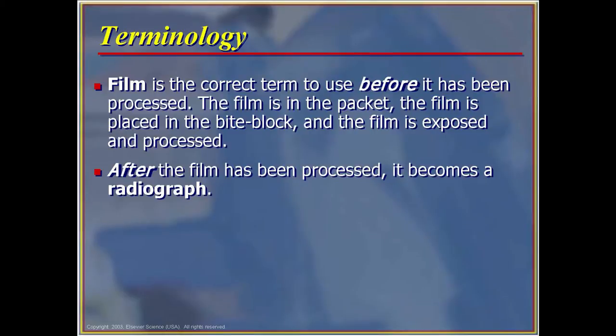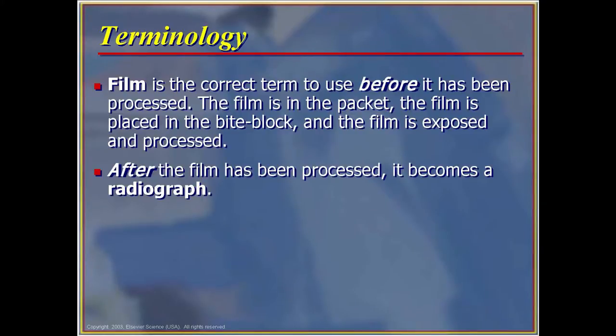Film is the correct term to use before it has been processed. The film is in the packet, the film is placed in a bite block, and the film is exposed and processed. After the film has been processed, it is then called a radiograph. Very similar to the days when people were using cameras to take pictures. Many of you probably don't know what a camera and film is anymore because everyone has switched to digital cameras, but it's basically the same process and the processing of the film is done the same way.